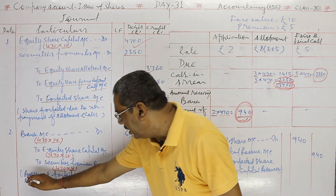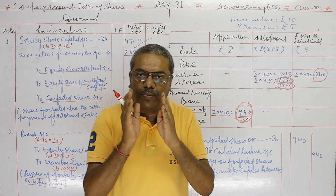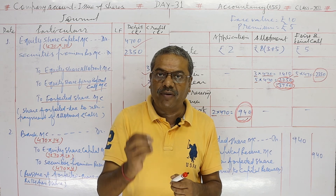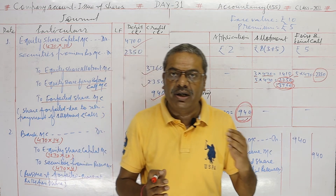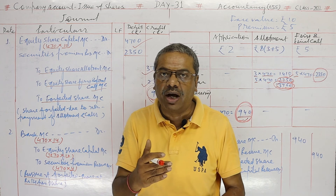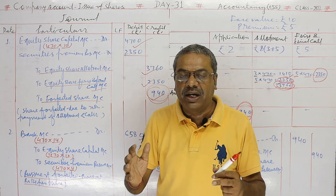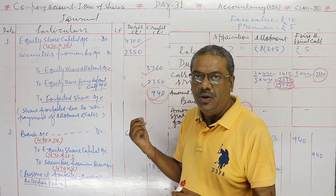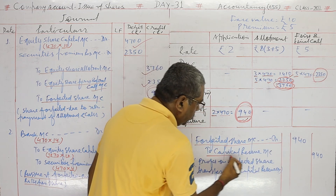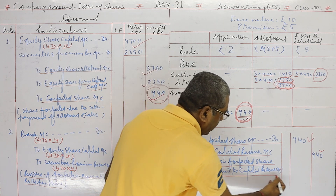Re-issue of forfeited shares at rupees 14 per share. As explained earlier, when the situation is at par or at premium, the total forfeited amount is transferred to capital reserve. The forfeited amount is 940, and the share was issued at a premium. When a share issued at premium or at par is forfeited, the total forfeited amount is transferred to capital reserve. So: Forfeited Share Account debit, To Capital Reserve Account 940 — profit on forfeited share transferred to capital reserve.